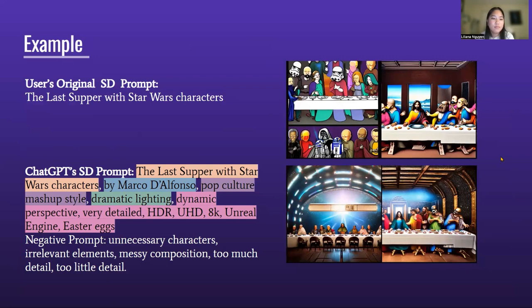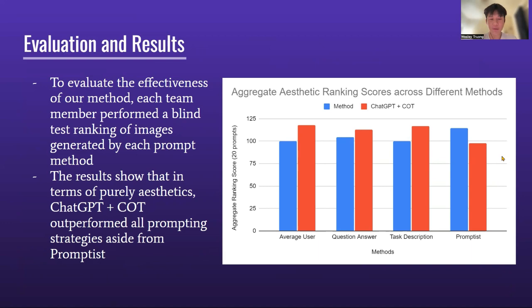So for evaluation, in order to evaluate each of our methods, we had each team member perform a blind test ranking of images generated by each prompt method. We then compared each of these methods against the control, which was just ChatGPT plus chain of thought reasoning. Our images were presented in random order to remove bias, and they were ranked on a score of 1 to 8. The scores were summed to get the aggregate score of each method, and higher scores mean better aesthetic.